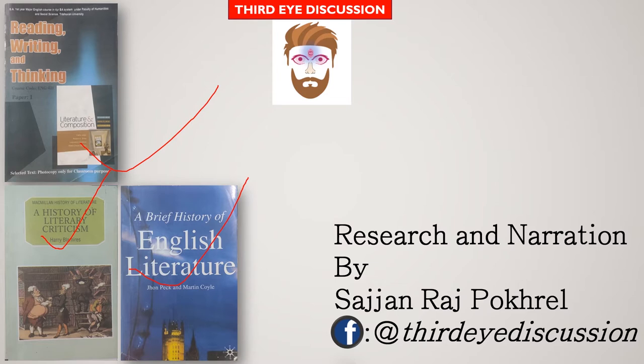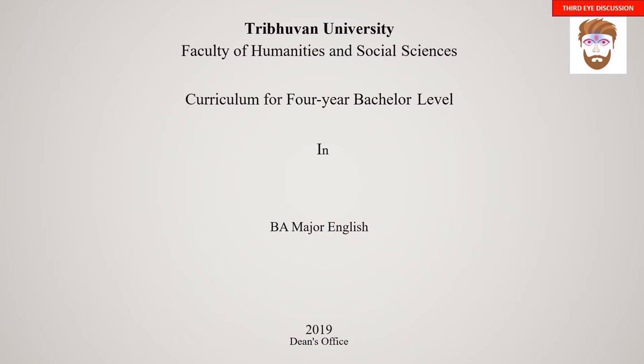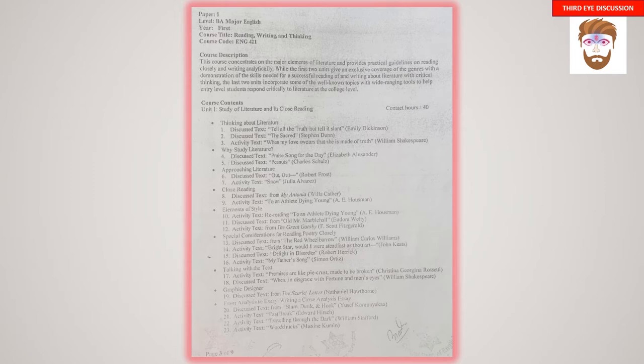Let's look into the syllabus to be more clear. The syllabus of BA major English first year that we are going to discuss is based on the Tribhuvan University Faculty of Humanities and Social Science. This is the first paper — the course title is Reading, Writing and Thinking, Book 1. This course concentrates on major English literature and provides practical guidelines on reading closely and writing analytically.